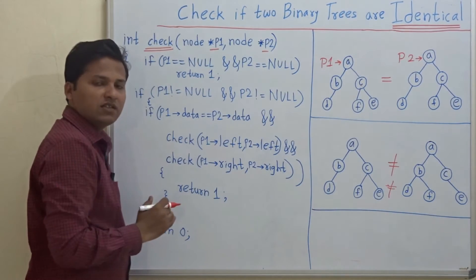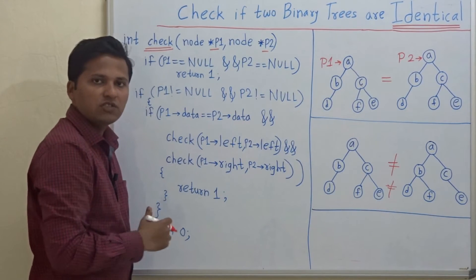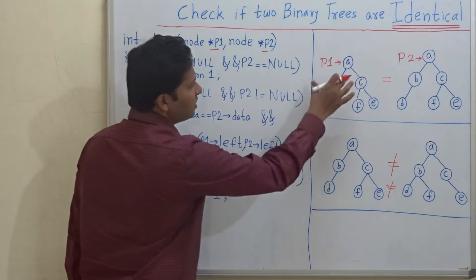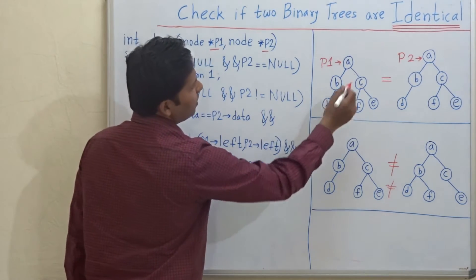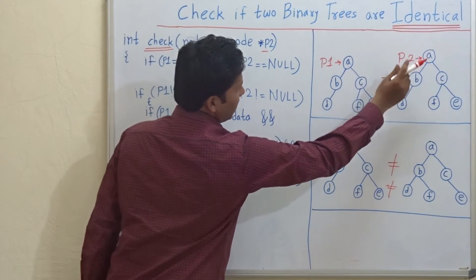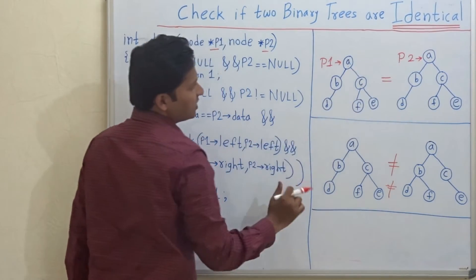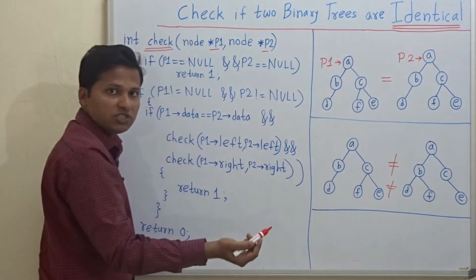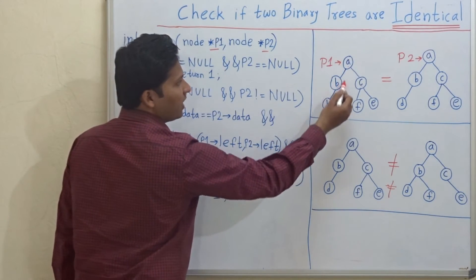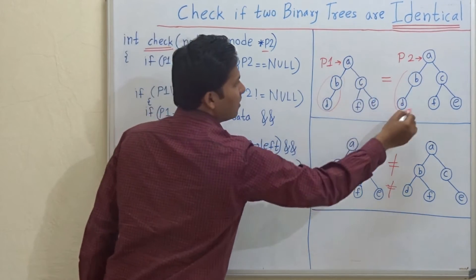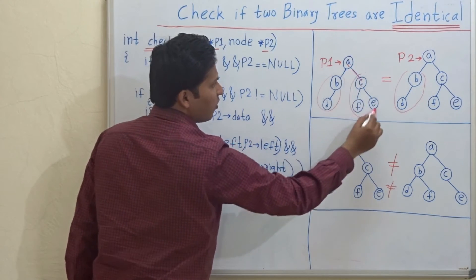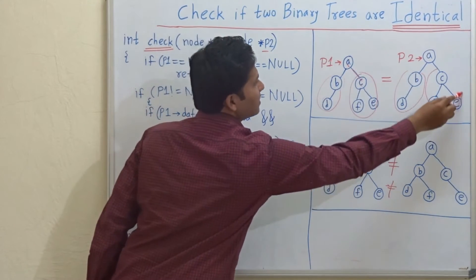As with every other recursive function on binary trees, we are going to drill down in the tree. For example, if A is similar to A — if these two nodes are similar — then we are going to check whether the left subtree of A is similar and whether the right subtree of A is similar.